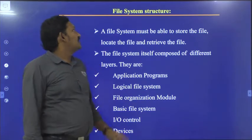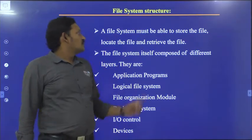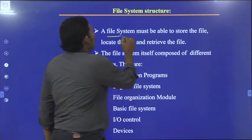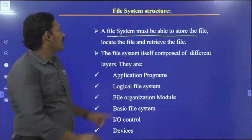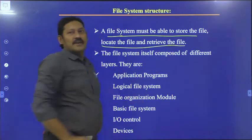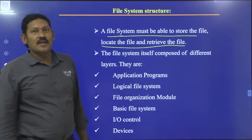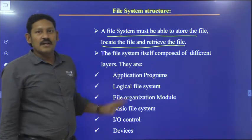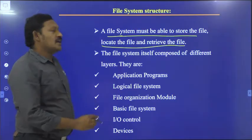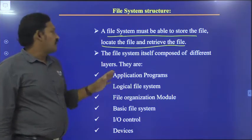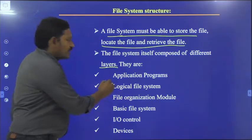Hi everyone. In this session we will discuss about file system structure. A file system must be able to store the file, locate the file, and retrieve the file. A file system consists of different layers: application layer, logical layer, file organization module, basic file system, IO control, and devices.